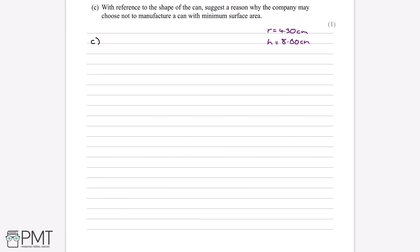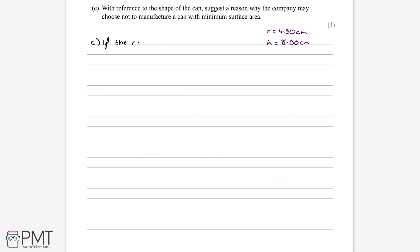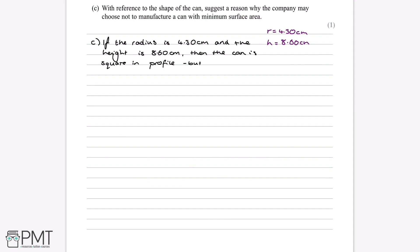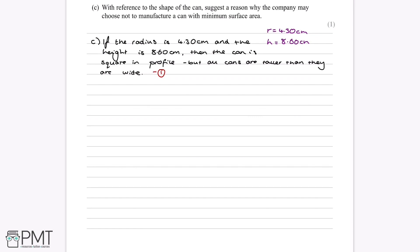Since the radius is 4.30 cm and height is 8.60 cm, the can is square in profile. But since all drinking cans are taller than they are wide, the company may choose not to manufacture a can with this minimum surface area as it doesn't fit the standard shape of a drinking can. This gives the one mark available — any valid reason is accepted by the mark scheme.